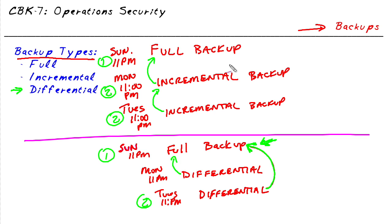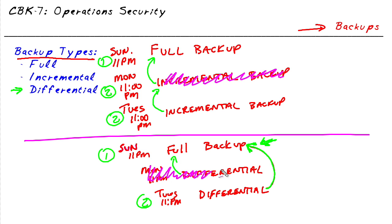The other thing I want to point out is that if we're doing the incremental option and let's say this data set from Monday night is messed up or damaged somehow, the data that changed between the full backup and that Monday backup is gone — we're gonna have to recreate and re-input it because we can't restore it. However, with the differential, if the Monday tape backup went sour and we don't have it anymore but we still have the Tuesday differential, because that differential has everything since the full backup, we can still do a full restore.